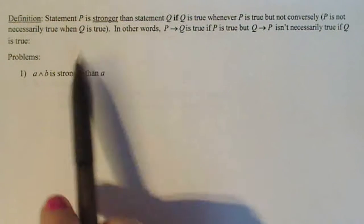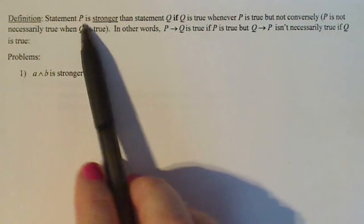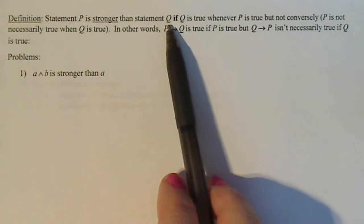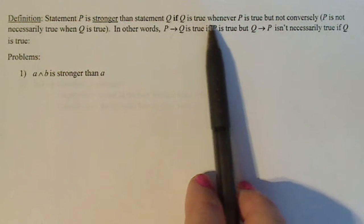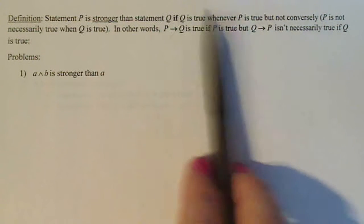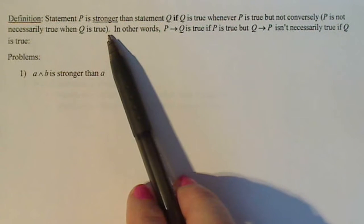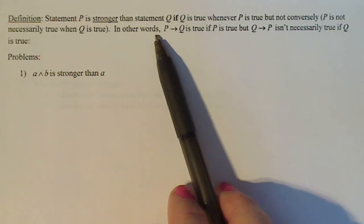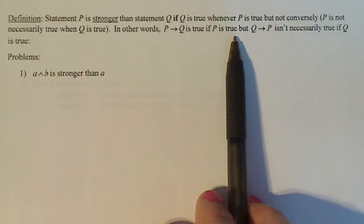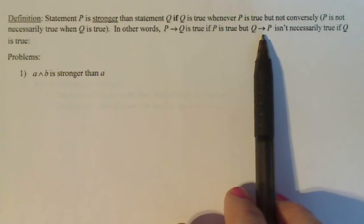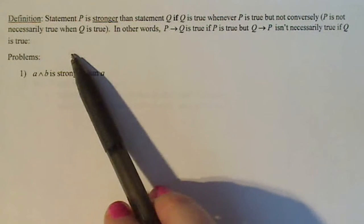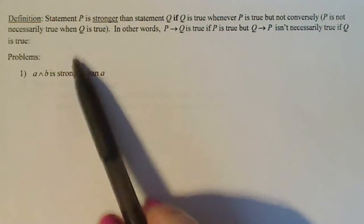So here it says the definition of one statement being stronger than another. Statement P is stronger than statement Q if Q is true whenever P is true but not conversely. P is not necessarily true when Q is true. In other words, if P implies Q is true when P is true, but Q implies P isn't necessarily true if Q is true, then I have P being a stronger statement.